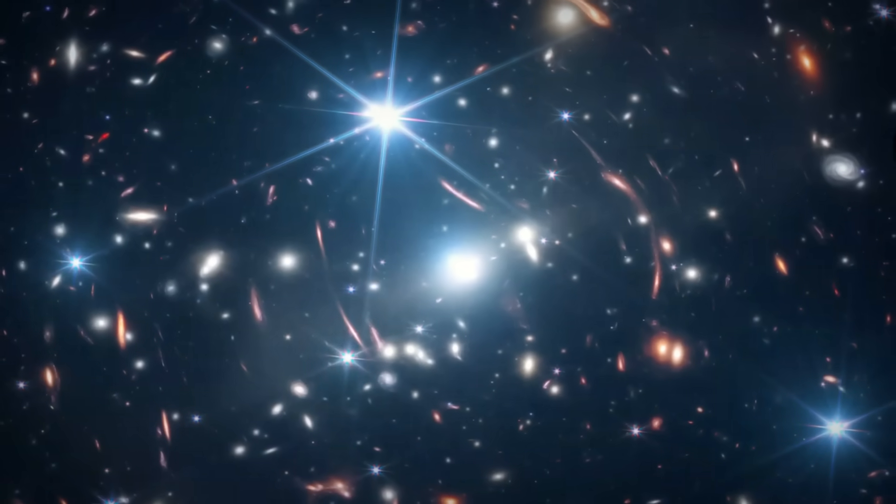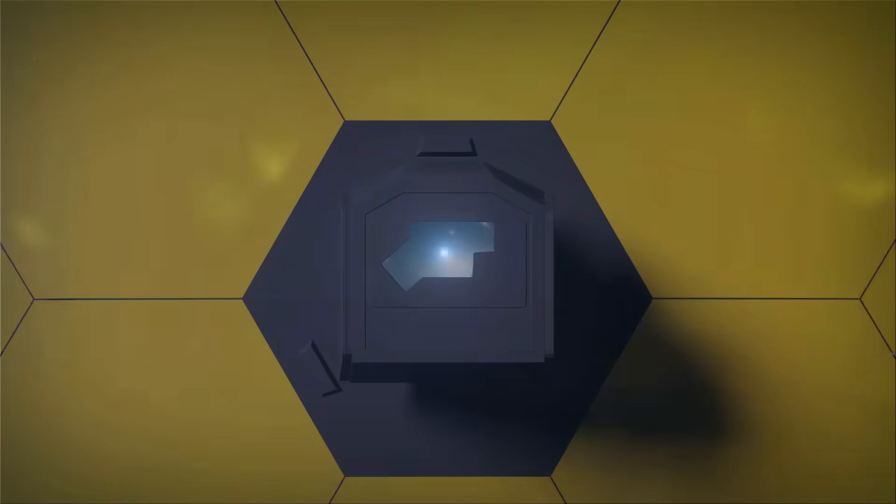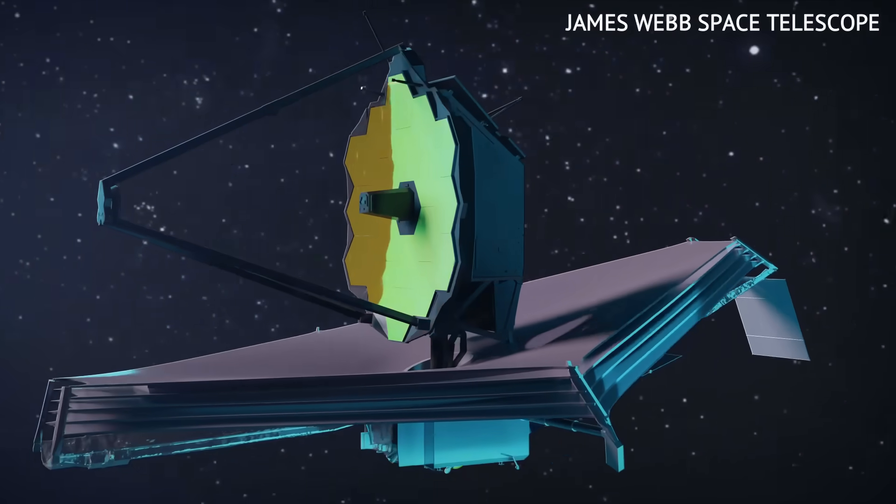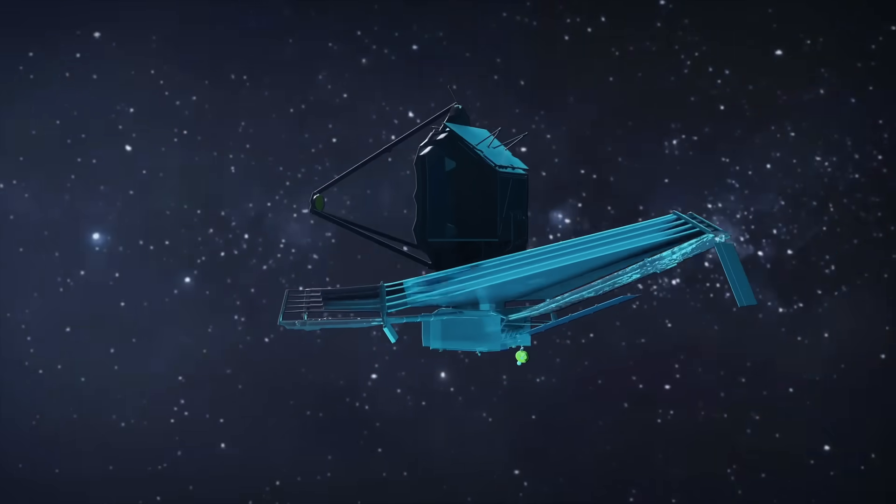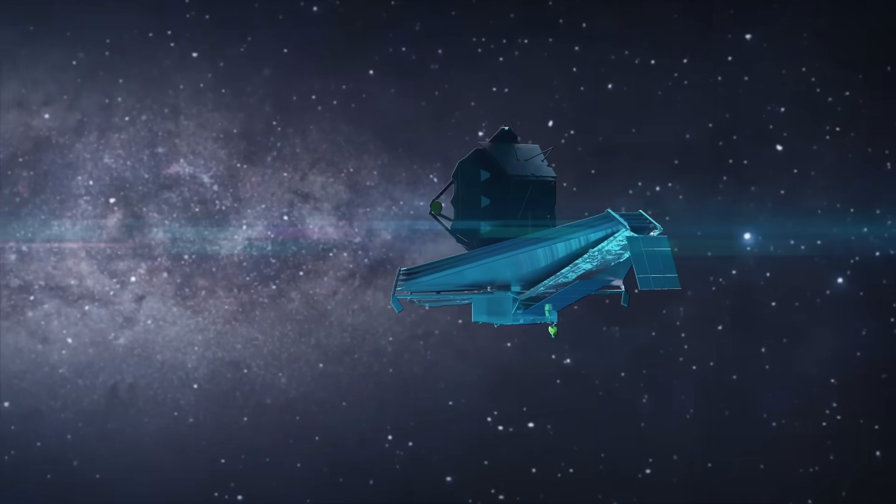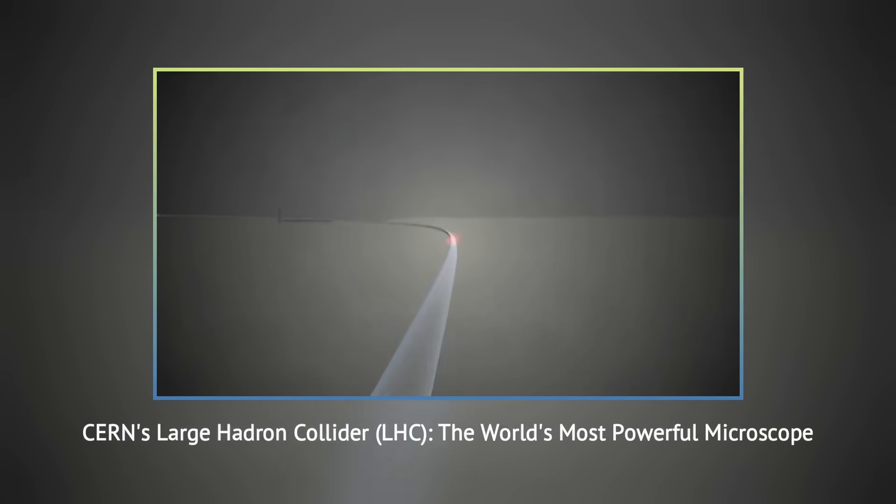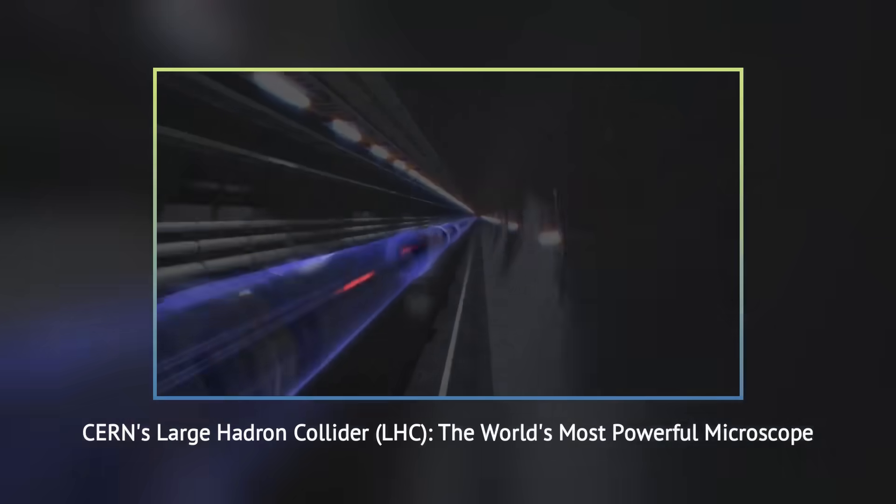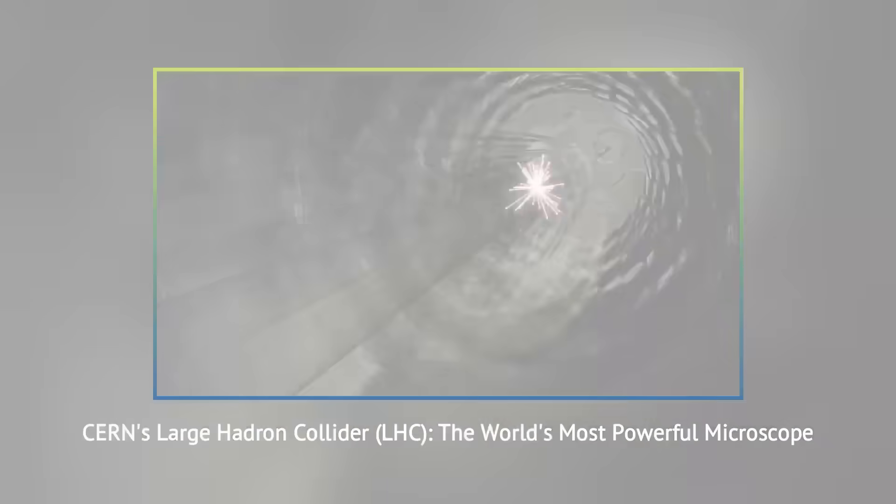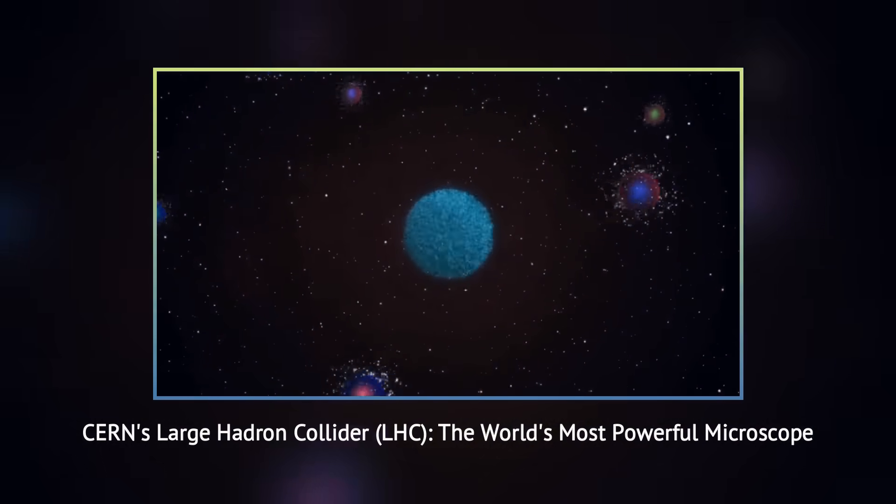When looking out at the universe at the largest scales using sophisticated telescopes like this one here, one thing becomes quite evident: things are surprisingly simple and straightforward. Now, when we look inside into the universe using the Large Hadron Collider, we find that even at the tiniest scales, everything aligns with established physics. No surprises yet.